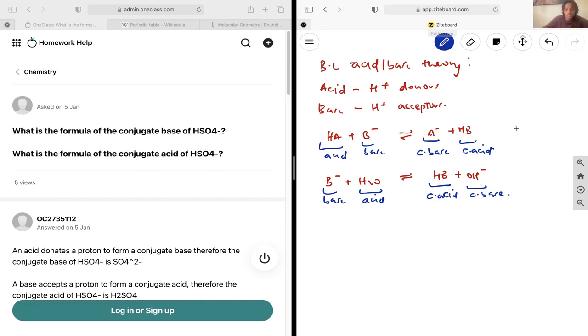If we write out the same equations for what we've been given, we can identify what the conjugate base and conjugate acid are going to be. Since we're looking for the conjugate base of HSO4-, let's write out this equation for it. We have HSO4- plus a base that we're going to label as B-.